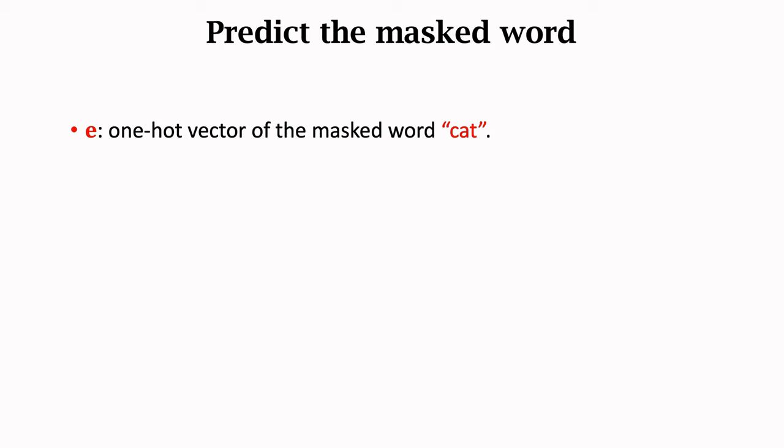Let e be the one-hot vector of the masked word cat. Vector p is the output probability distribution over the dictionary words. If the dictionary has 10,000 words, then vectors e and p are 10,000 dimensional. Ideally, we hope vector p is equal to vector e, which means the softmax classifier has 100% confidence that the masked word is cat.